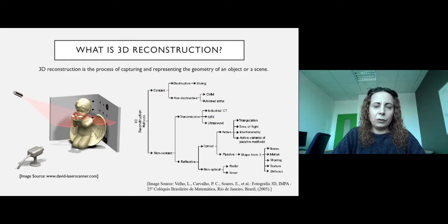What is 3D reconstruction? 3D reconstruction is the process of capturing and representing the geometry of an object or a scene. The 3D reconstruction tools can be contact or non-contact. The non-contact tools are usually vision-based methods where you take images of the 3D scene and reconstruct the 3D geometry of the object or the scene.